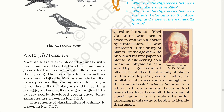Mammalia. Mammals are warm-blooded animals with a four-chambered heart. They have mammary glands for the production of milk to nourish their young. Their skin has hair as well as sweat and oil glands. Most mammals familiar to us produce live young ones. However, a few of them like platypus and echidna lay eggs. And some like kangaroos give birth to very poorly developed young ones. In mammals, these are vertebrates which give birth to young ones, unlike other vertebrates which lay eggs — exceptional mammals being platypus and echidna.